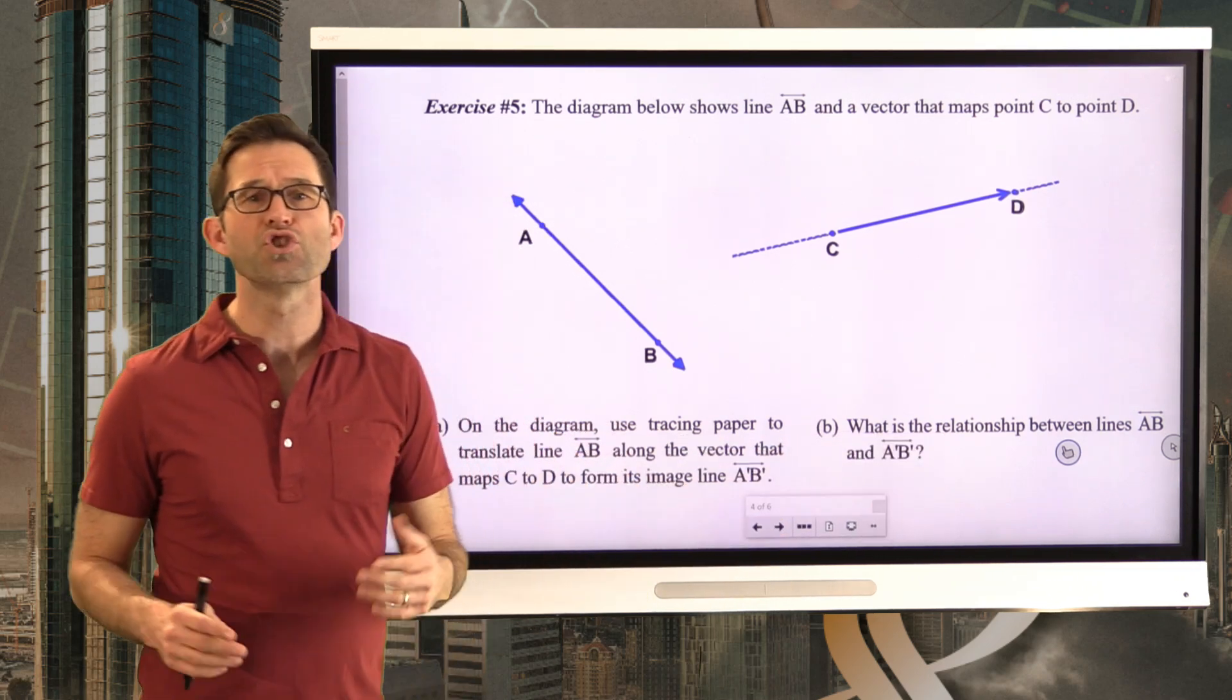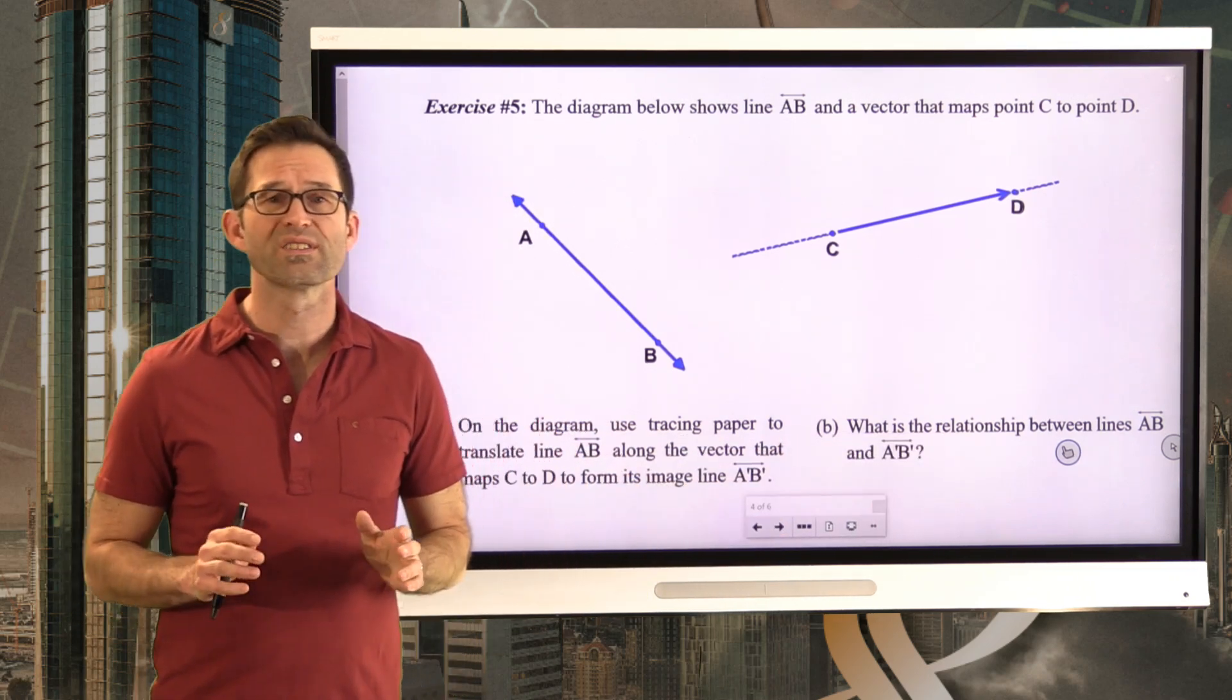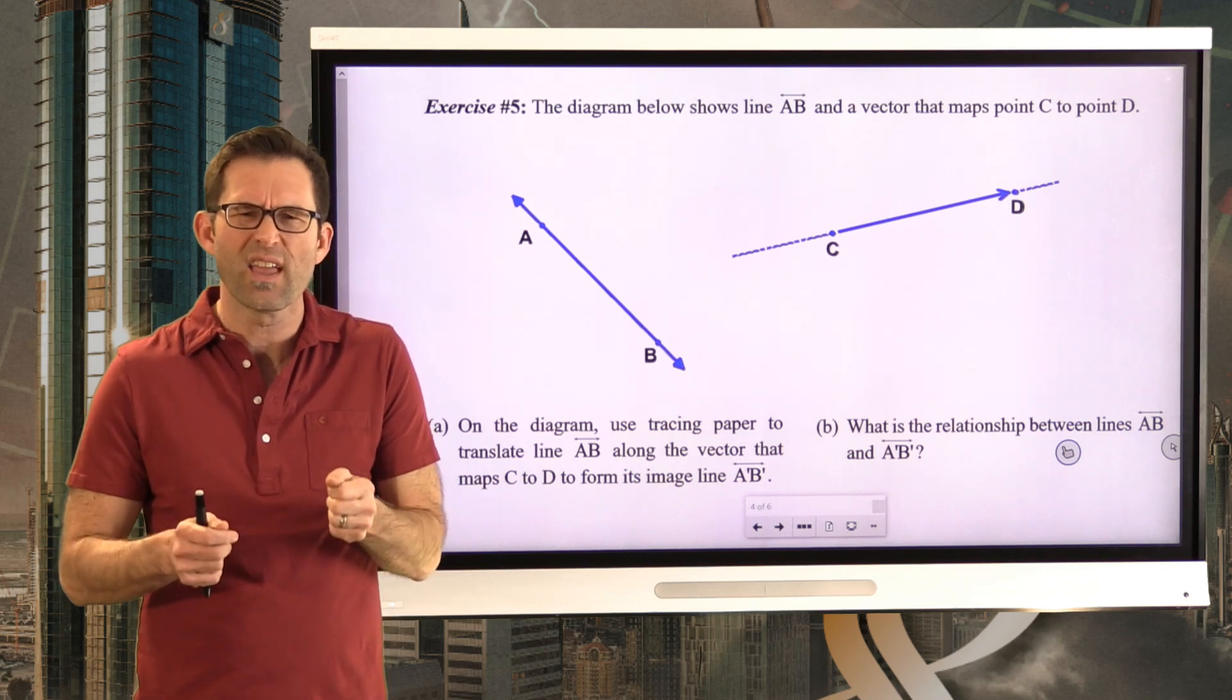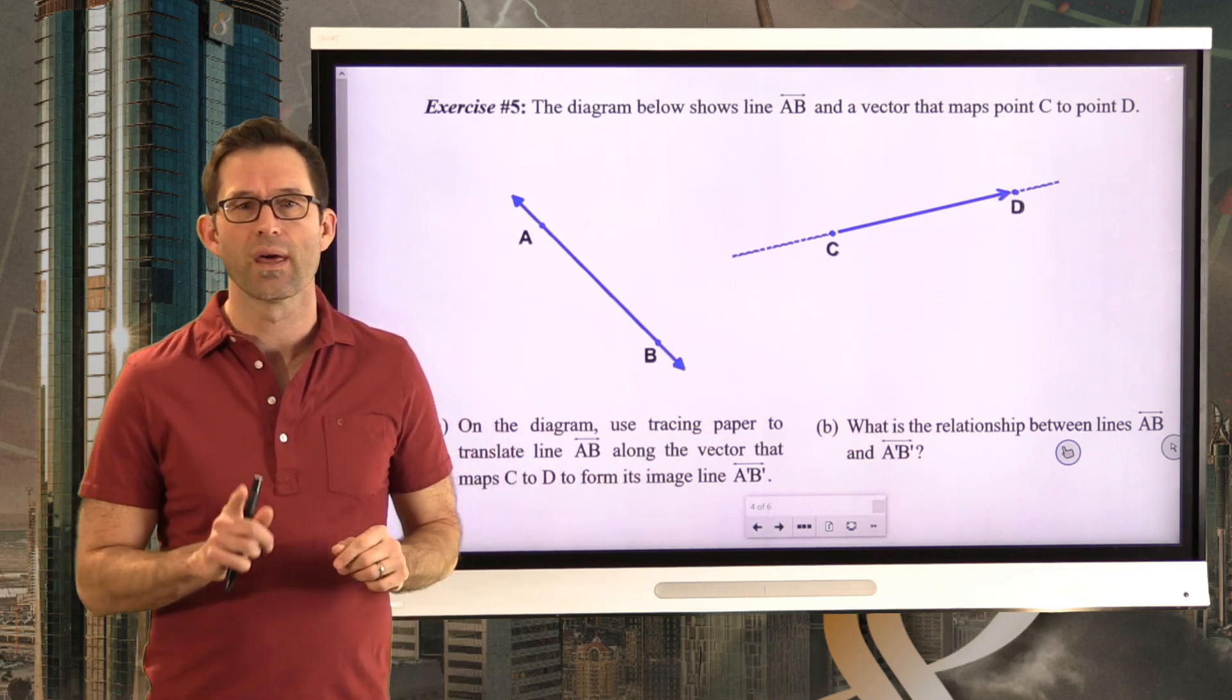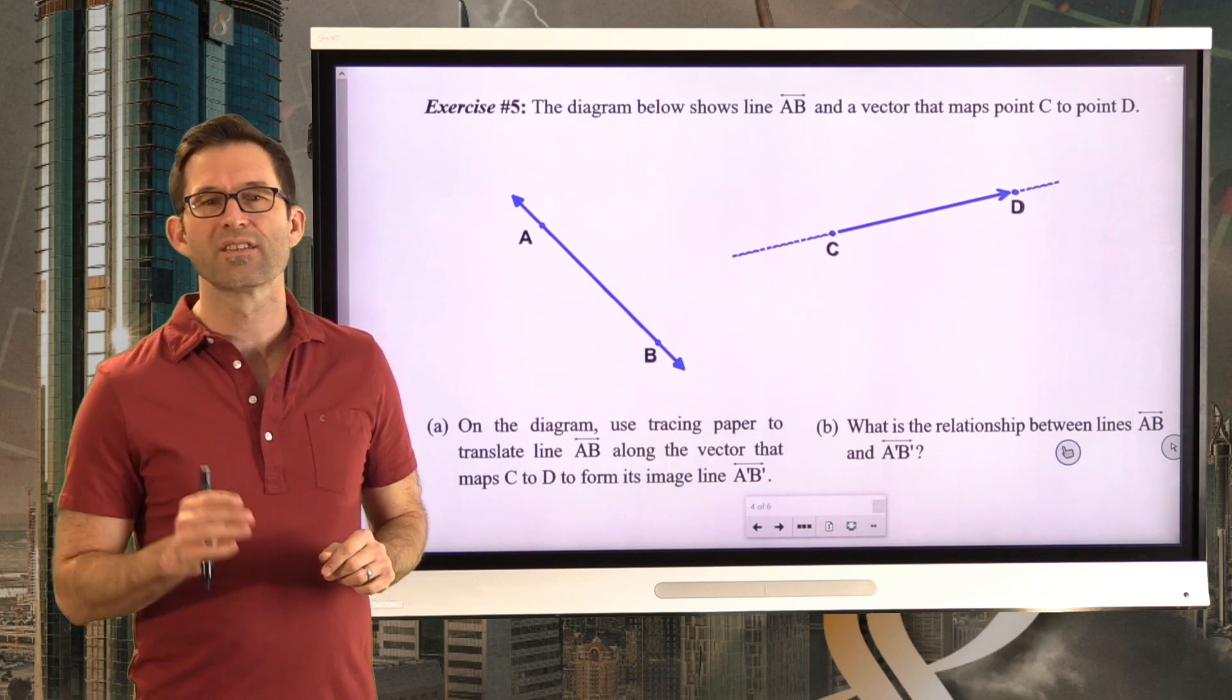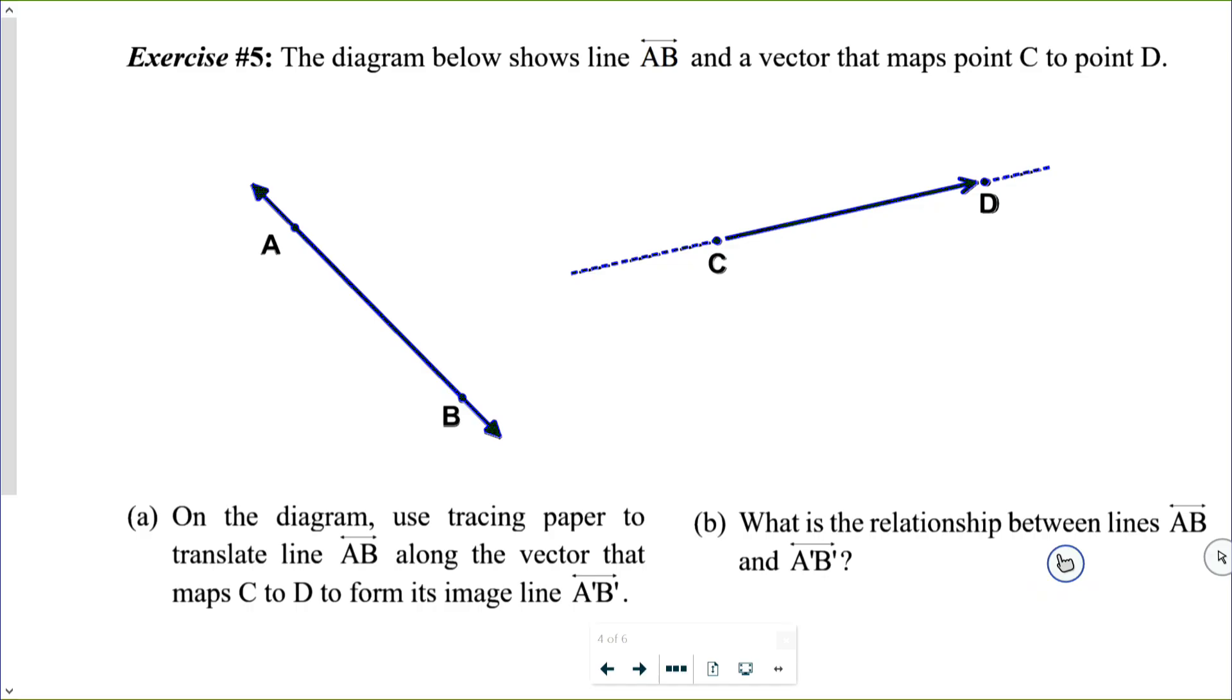Let's keep moving and talking more about translations. Translations are often called shifts or slides because all we're doing is just taking this thing and shifting it or sliding it in a particular direction and a particular distance. Let's take a look at exercise five. The diagram below shows line AB and a vector that maps point C to point D.